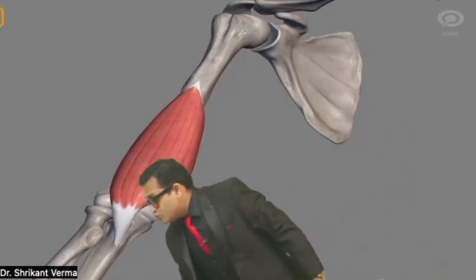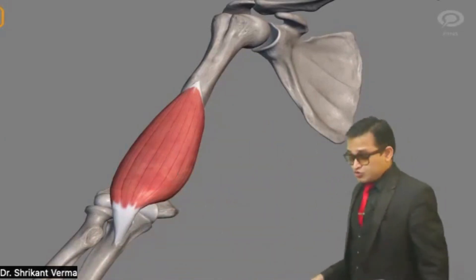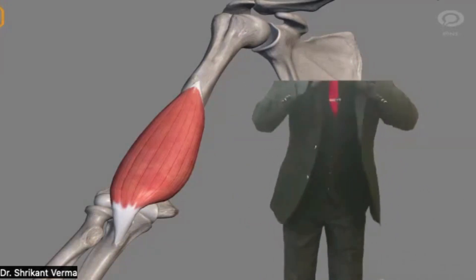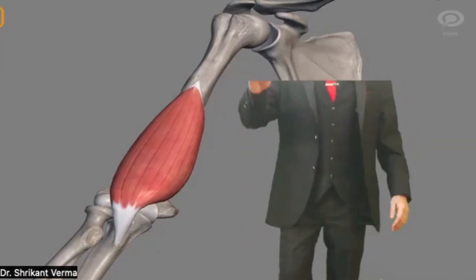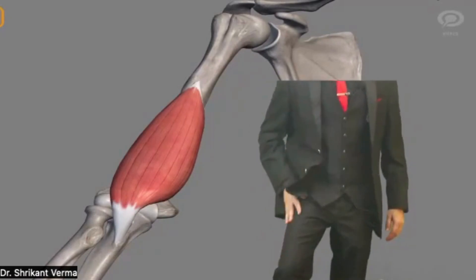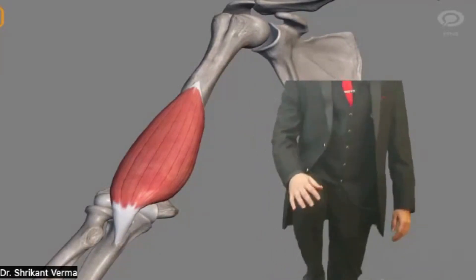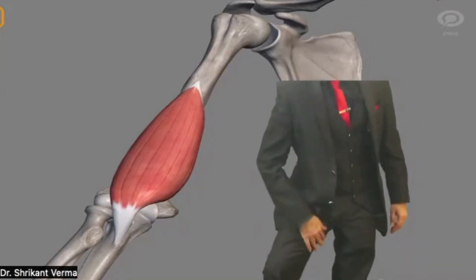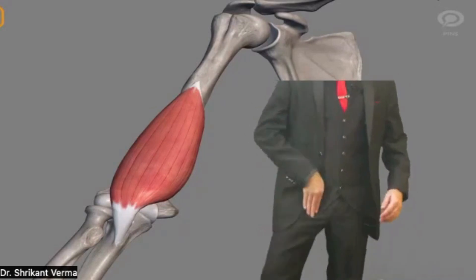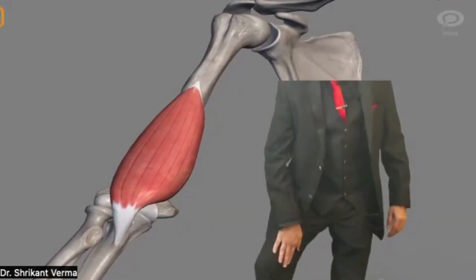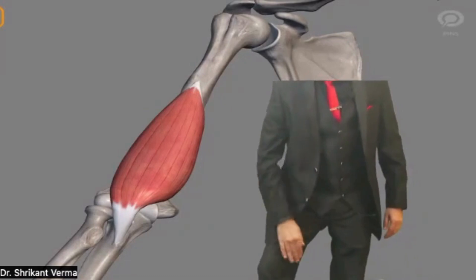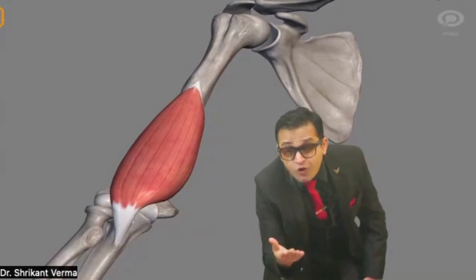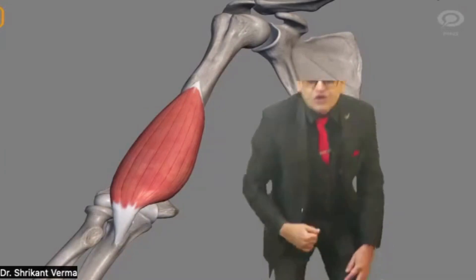Now the lower limb. In the front compartment of the thigh, there is the femoral nerve, so any muscle on the front side is supplied by the femoral nerve. On the medial side, the obturator nerve comes from the obturator foramen into the thigh. So any muscle on the medial side — adductor longus, adductor brevis, adductor magnus, gracilis, pectineus — all are supplied by the obturator nerve.